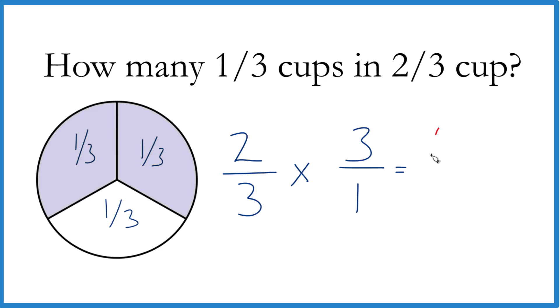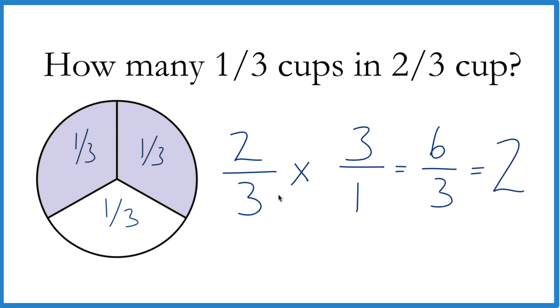So we end up with six-thirds, which is a little different than what we got before, but we can simplify this because three goes into six two times. And that's what we found before: there are two of these one-third cups in that two-thirds.